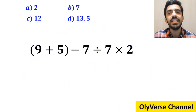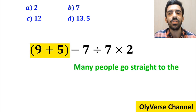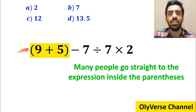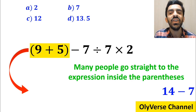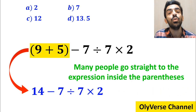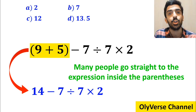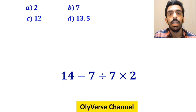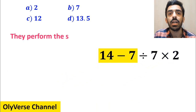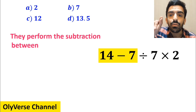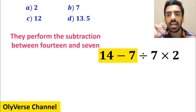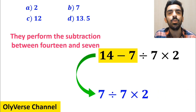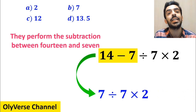In the first step of solving this question, many people go straight to the expression inside the parentheses and simplify the whole expression to 14 minus 7, divided by 7, times 2. In the next step, they perform the subtraction between 14 and 7, and simplify this expression to 7, divided by 7, multiplied by 2.